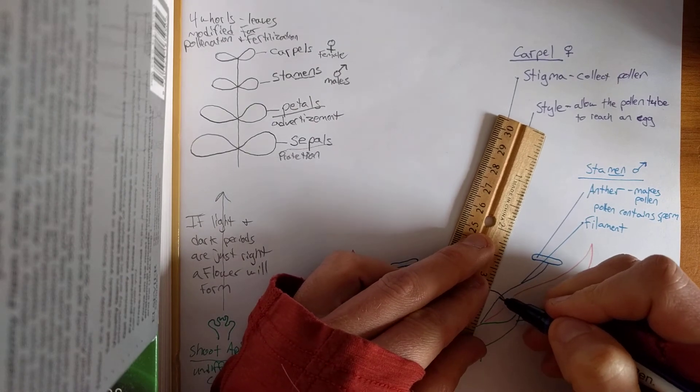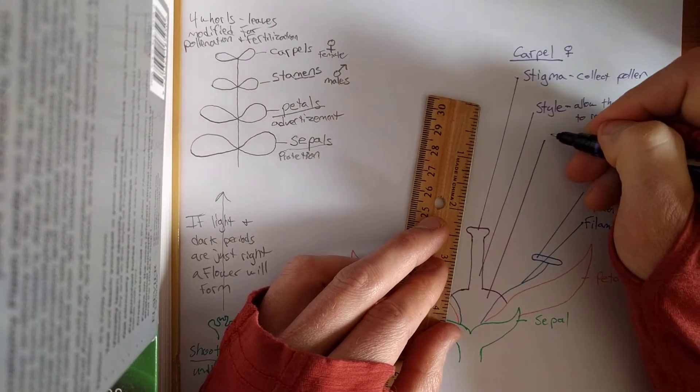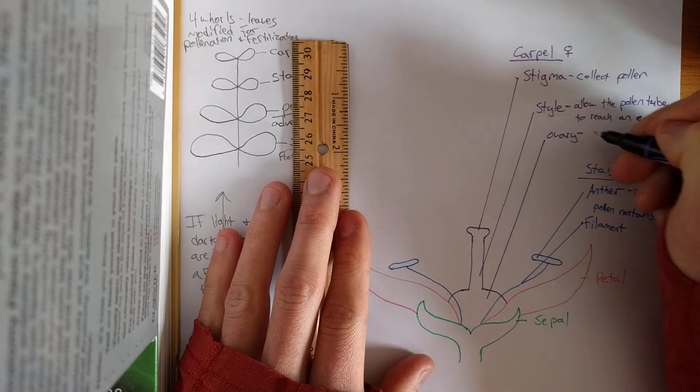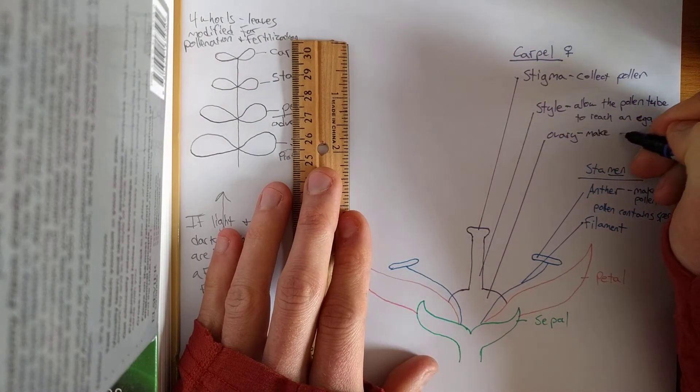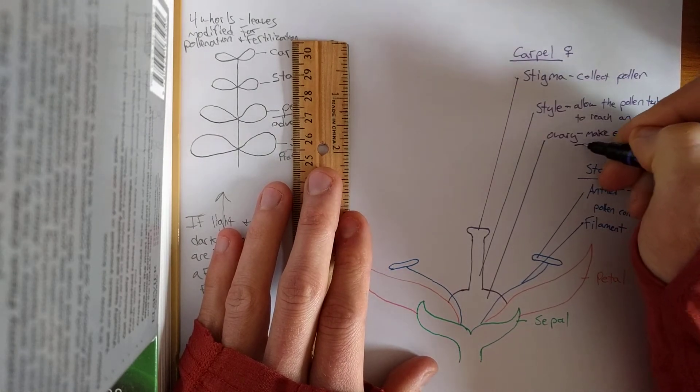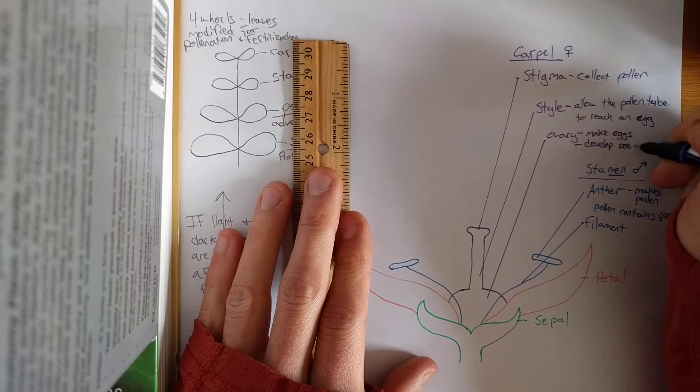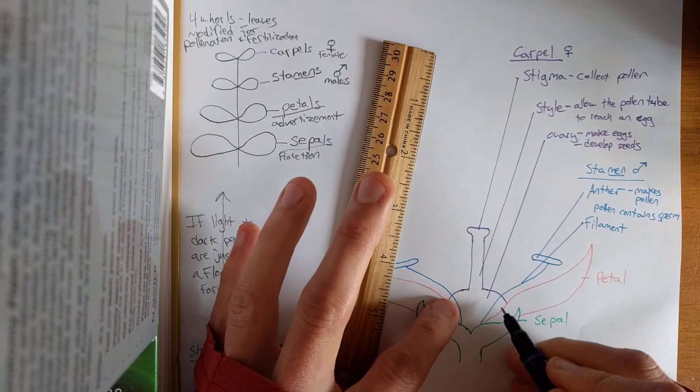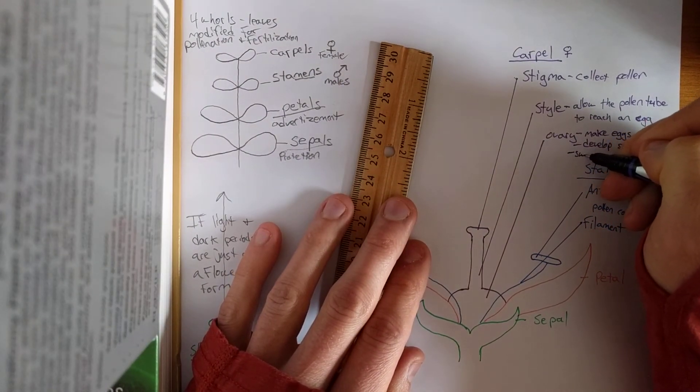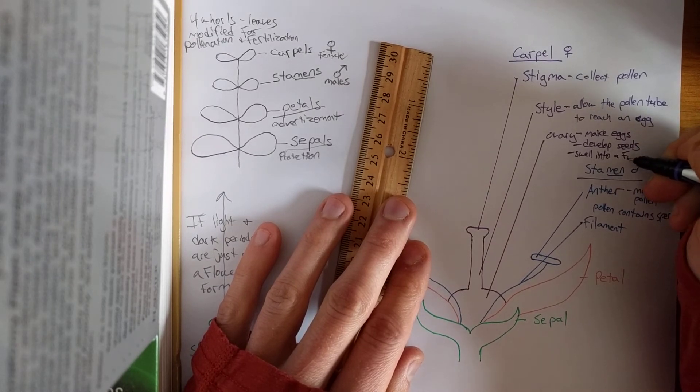And the eggs are contained in the lower swollen structure called an ovary. So, ovary is gonna make eggs. Egg or eggs, depends. Develop a seed if it gets fertilized. And then the ovary will swell up to become the fruit. Swell into a fruit.